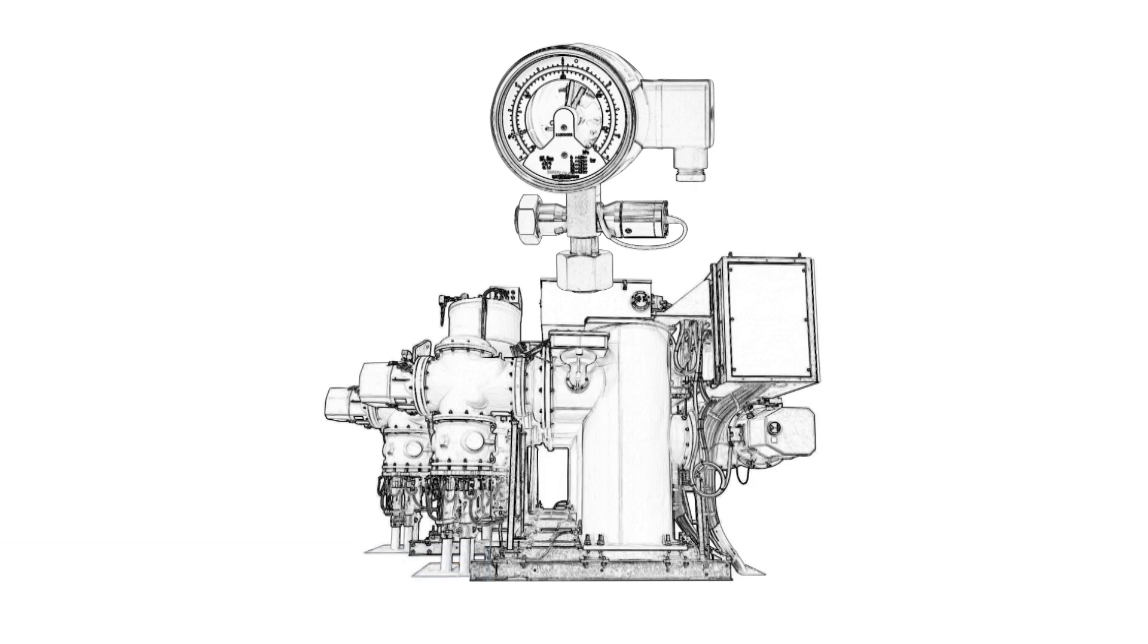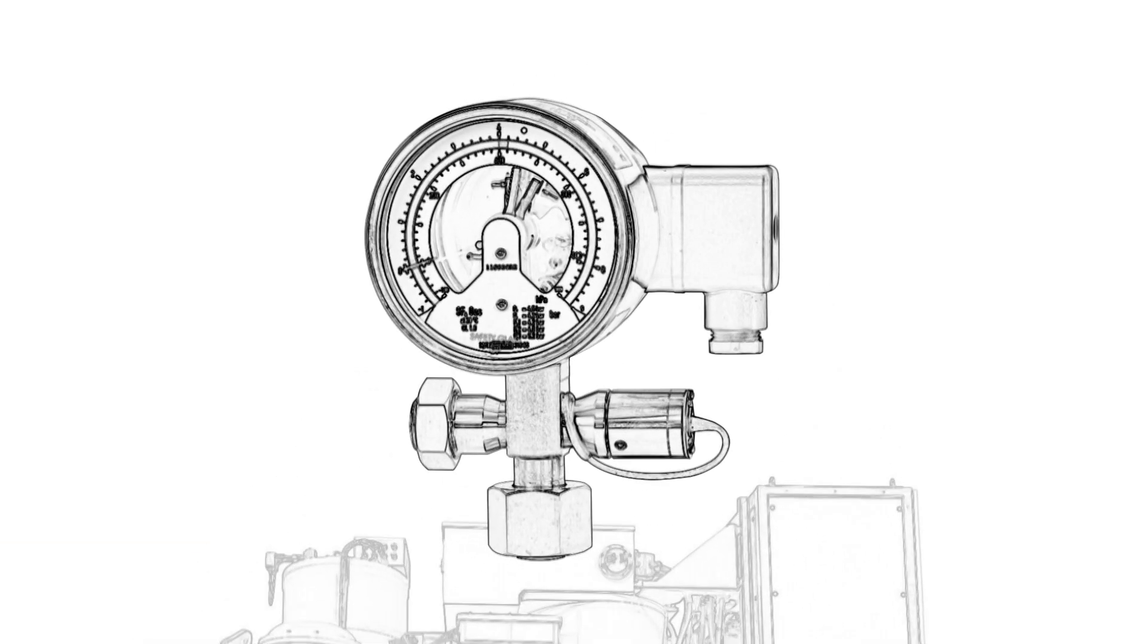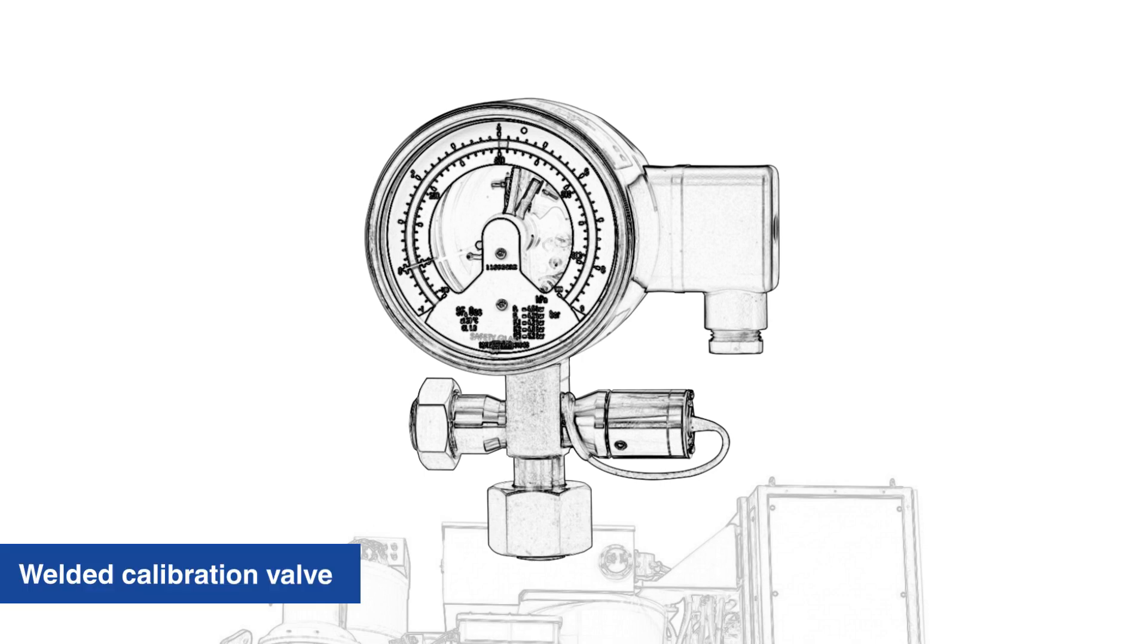Anvika offers you solutions. The GDM100CV is a gas density monitor with a calibration valve which is welded to the gauge. This guarantees to meet the highest tightness requirements. The device can be mounted directly to the electrical equipment and recalibrated without disassembly.